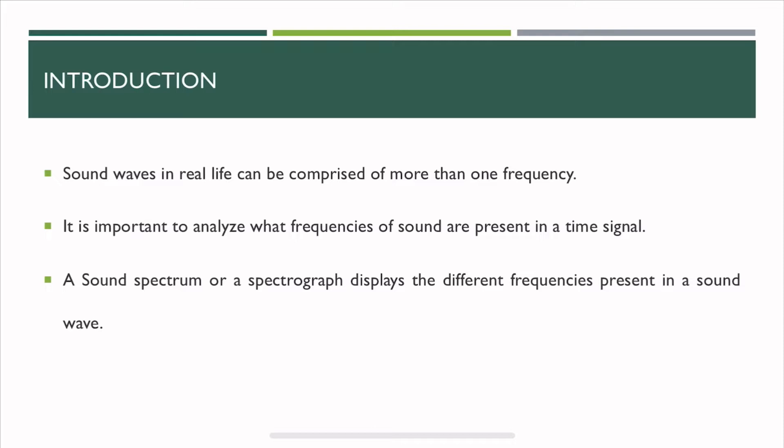When you have sound waves in real life, they can be comprised of multiple frequencies. In a very ideal situation, you can have a pure tone generator that generates one single frequency at a time, but in real life when you're recording sound in an environment, you probably will have multiple frequencies present in that sound. So how do we analyze what kind of frequencies are present in sound?